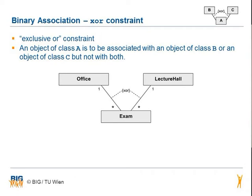If you want to show that a class can have a relationship to either one class or another class, you can use the XOR constraint. The class exam needs a relationship to office or to lecture hall, but not both.